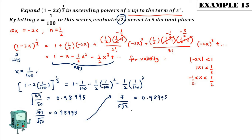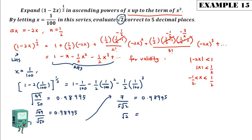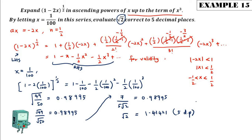Cross-multiplying to make √2 the subject and computing the value using a calculator gives √2 = 1.41421, correct to five decimal places, exactly as the question requires. This demonstrates the technique of using binomial expansion to approximate a value rather than using the calculator directly.